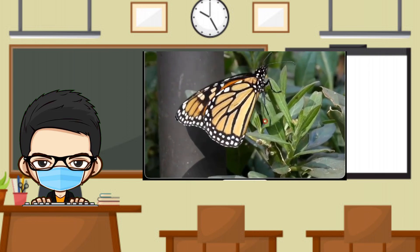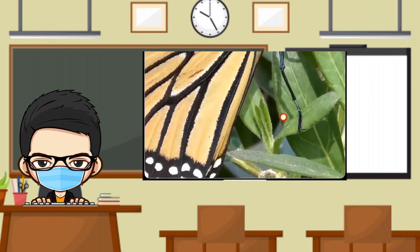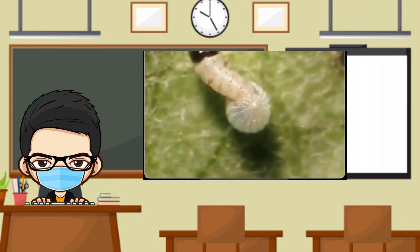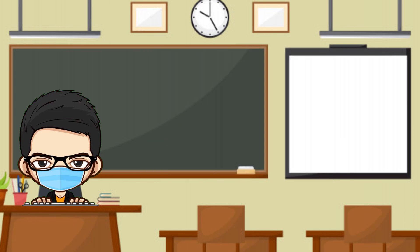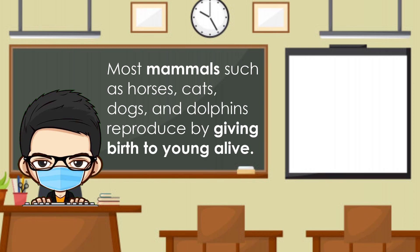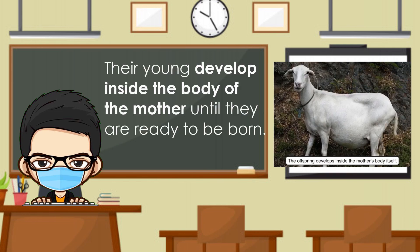This butterfly lays its eggs on the leaf. Most mammals such as horses, cats, dogs, and dolphins reproduce by giving birth to young alive. Their young develop inside the body of the mother until they are ready to be born.